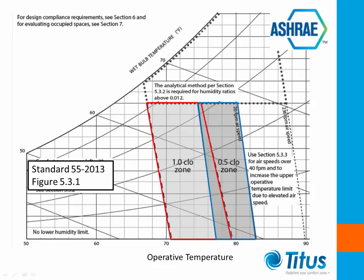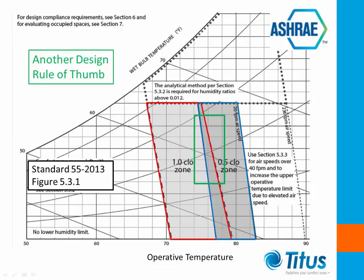Summer attire shown in the blue parallelogram indicates that the comfort levels are at a slightly higher space temperature. Standard 55 allows for humidity levels in the space to reach 60%, and there is no mandated minimum humidity level for the space. For many years, it has been a rule of thumb in the industry to design for a space temperature between 73 and 77 degrees with a relative humidity between 25 and 60%. The green rectangle on the chart represents that design, and my personal observation is that would still be a good rule of thumb.